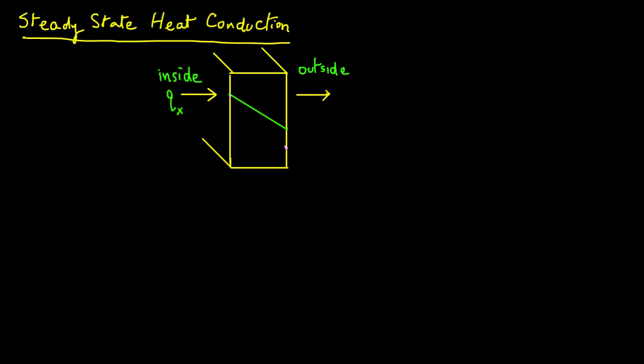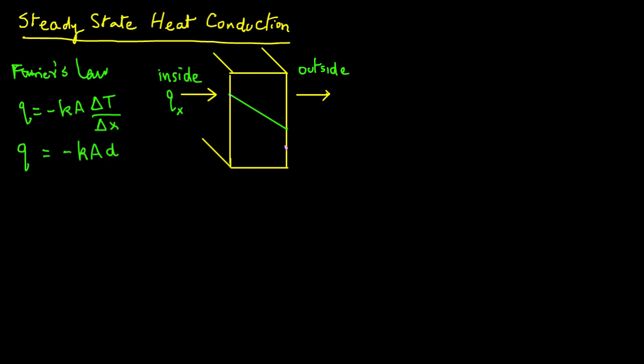We will then go ahead and develop a mathematical expression to tell us how much heat is transferring under steady-state conditions. We talked about Fourier's law, which is written as Q equals minus K A delta T over delta X. We will rewrite Fourier's law in differential form as Q equals minus K A DT over DX. Note that this is in rectangular coordinates because we have a rectangular wall, so we will write a subscript X — QX — to indicate rectangular coordinates.